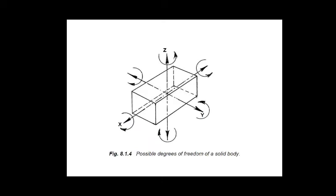Hello everyone. In the previous lecture we have seen the introduction of jig and fixture, including the definition of jig and fixture, their differences, the uses of jigs and fixtures, and the considerations while designing jigs and fixtures. We also seen the elements of jig and fixture: body, locating devices, clamping devices, bushings, and the types of jigs — template jig, plate jig, channel jig, box type jig, open type jig, lift jig, angle plate jig, and diameter jig.